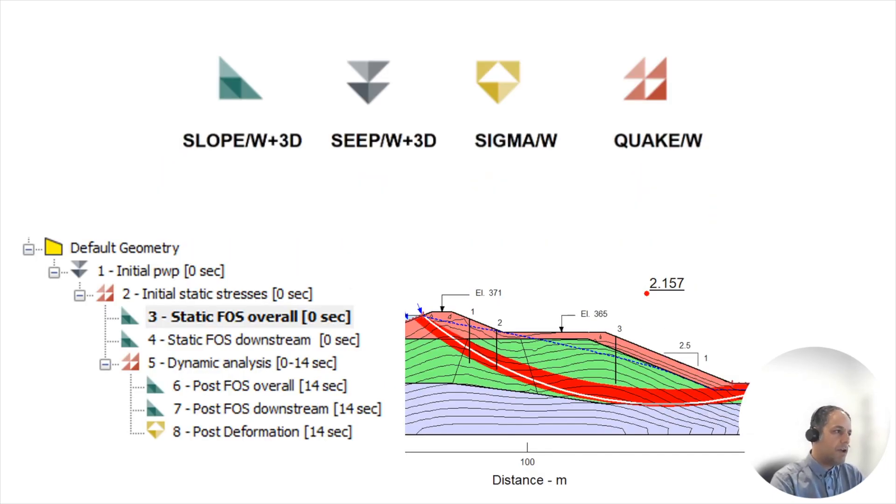So basically we are using SLOPE/W for limit equilibrium modeling and three finite element types of modeling such as SEEP, SIGMA and QUAKE for seepage modeling, stress deformation and dynamic modeling. You will actually learn how to combine these four modules together and use, for example, the predictions which are coming from one module and use it as input data for your other module.